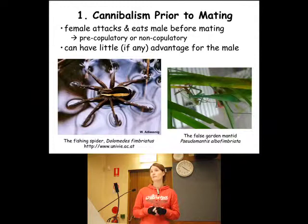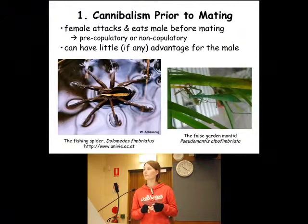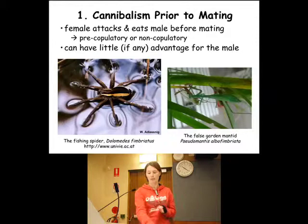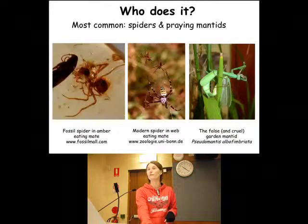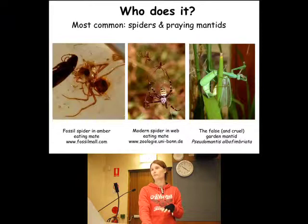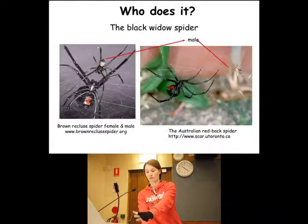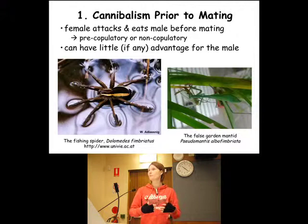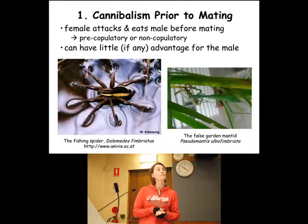They occur in about the same frequency, so about half the males that are attacked are able to begin copulating. In this species and in many species of mantid, the attack is always before copulation. So this is an example of pre-copulatory because the male was able to mate, and this is an example of non-copulatory because the male wasn't able to mate. But I haven't been able to find any male trait that can predict whether males are able to begin copulation.